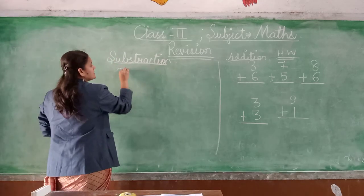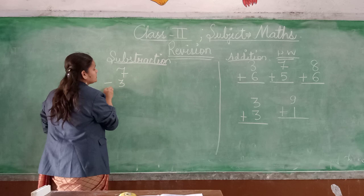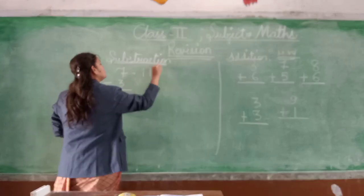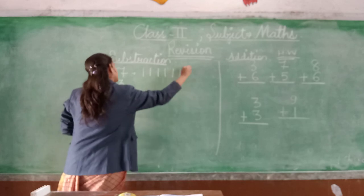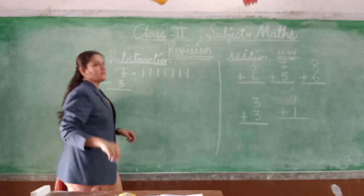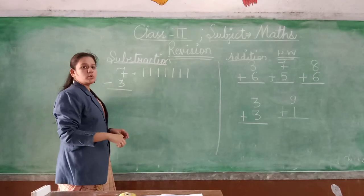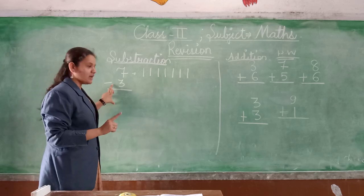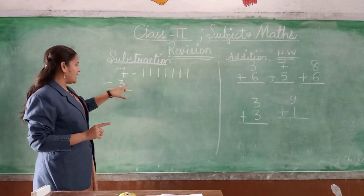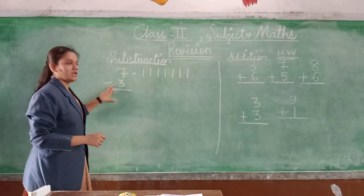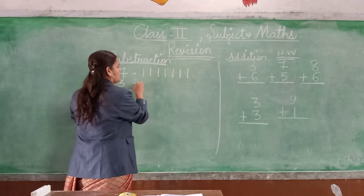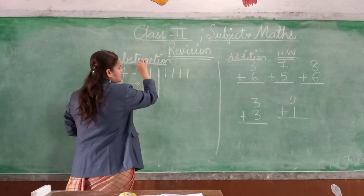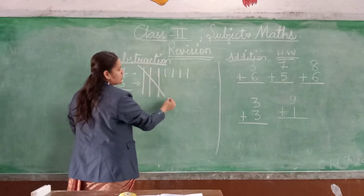So we will take 7 lines: 1, 2, 3, 4, 5, 6, 7. Right? Now in subtraction, I said we will remove some lines. So how many lines do we remove? 3. So we remove 1, 2, and 3 lines.